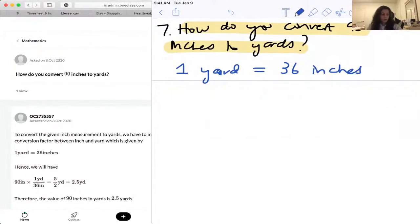So all we need to do now is use this conversion factor and figure out how many yards we have. So take 90 inches, put 36 inches at the bottom and one yard at the top.